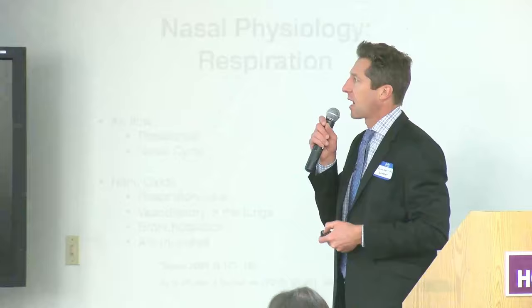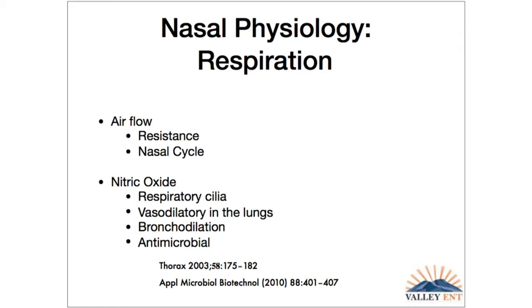Nitric oxide is a gas that is made and concentrated in the paranasal sinuses. When you breathe in through your nose, you entrain that nitric oxide down into the lower airway. We know from good studies that nitric oxide improves respiratory cilia function. It's vasodilatory in the lungs, improving CO2 and oxygen exchange. It causes bronchodilation, so it decreases reactive airway disease and asthma. And it's antimicrobial, so it improves the local immunity of the lower airway.